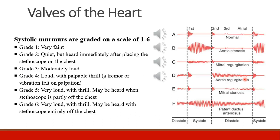Murmurs are graded on a scale of one to six — at least systolic murmurs are — where grade one is very faint, something that probably only an experienced cardiologist might be able to hear. Moving up through grades two, three, and four, which is quite loud and can even be felt when you put your hand on the chest. Grades five and six being so loud that you can start to hear them through your stethoscope even if it's not completely contacting the chest.